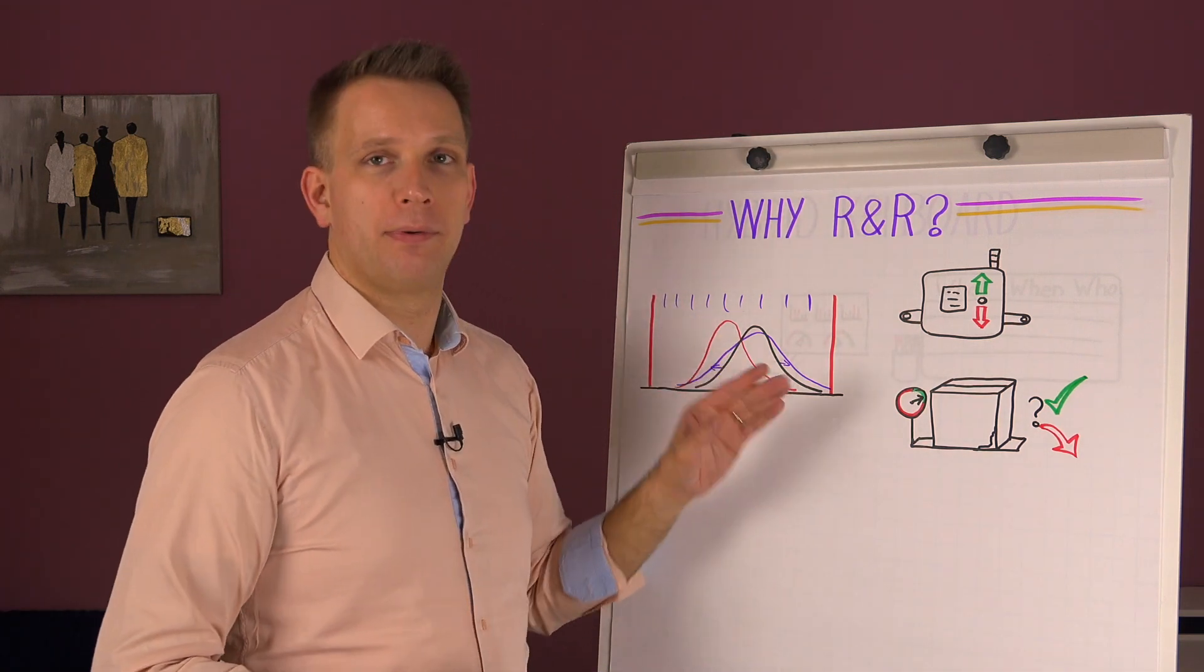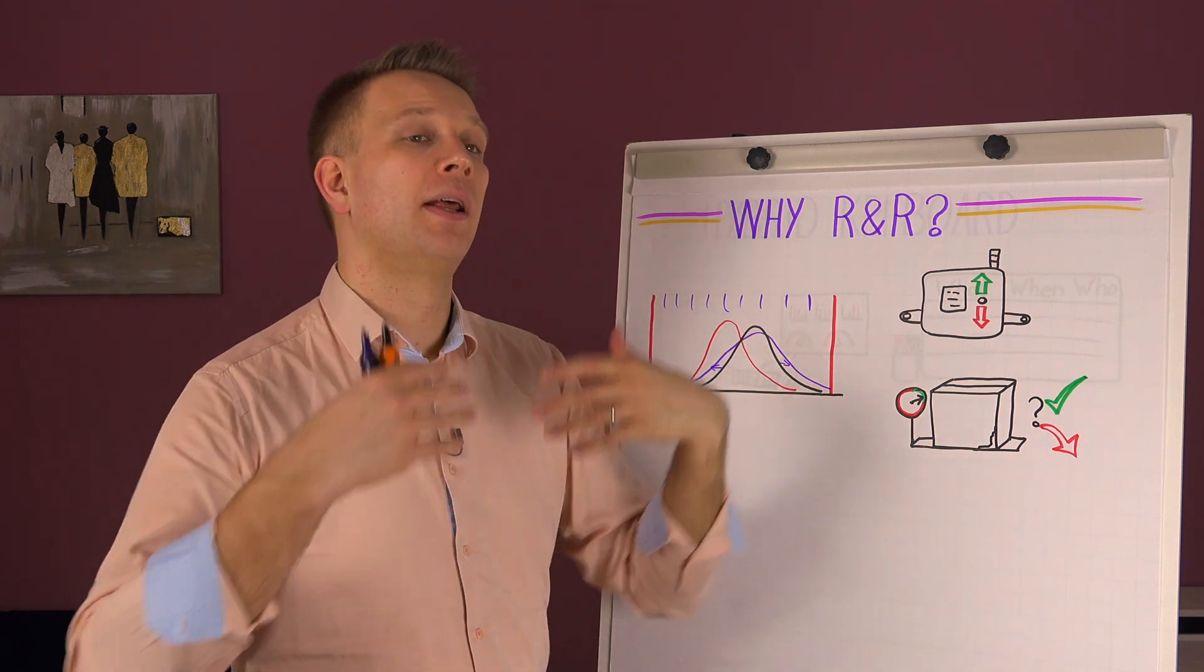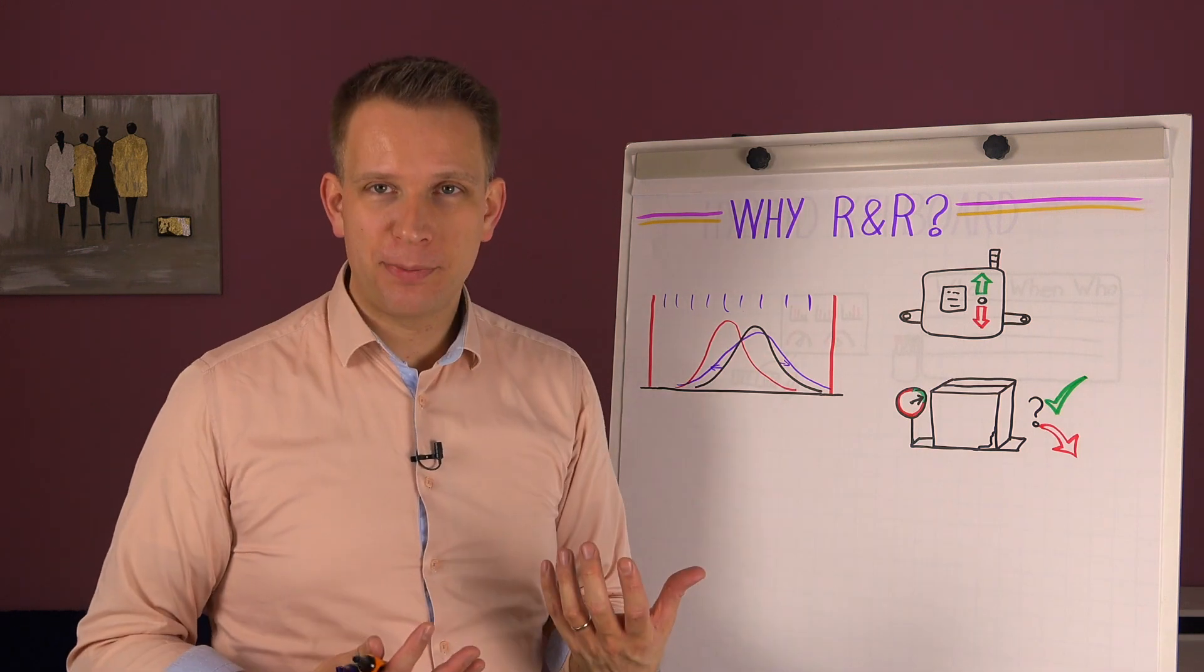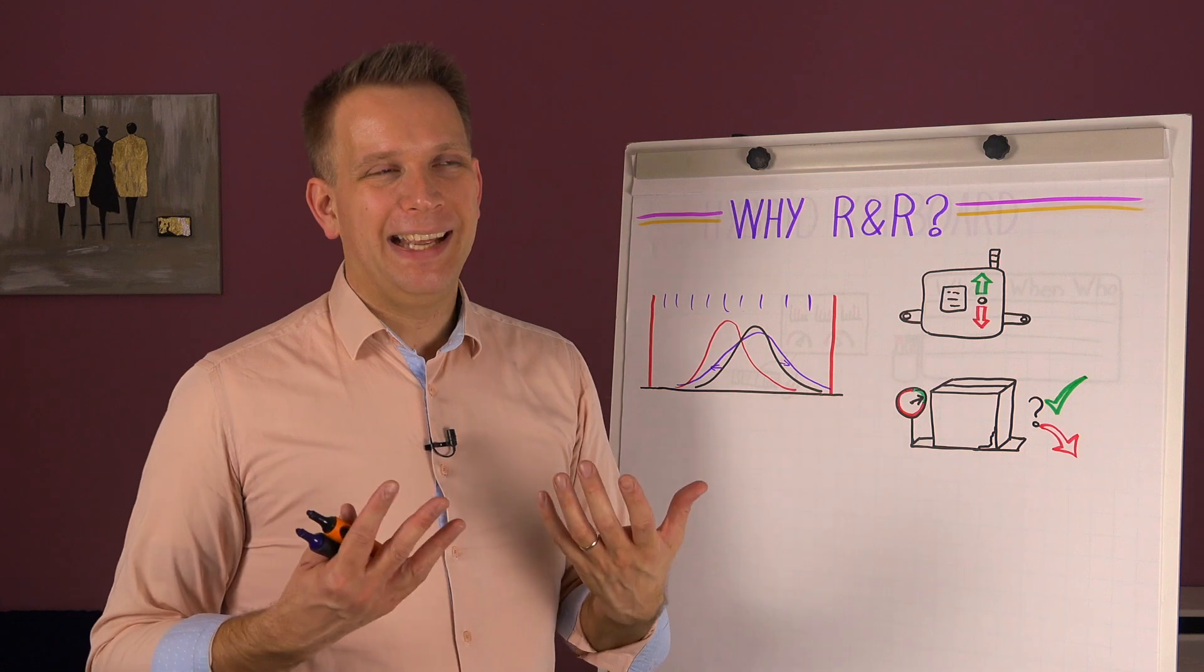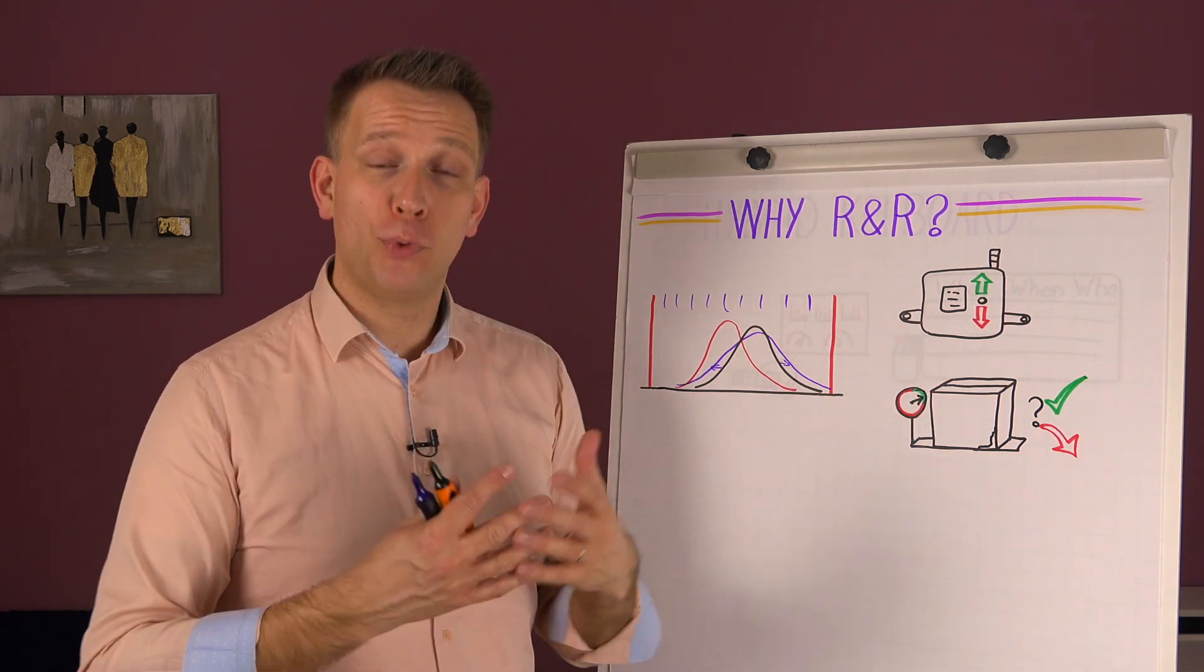When we have not 10 percent, but 30 percent, that really is the max. If more than 30 percent of the observed variation comes from the measurement system, then it actually almost never is a good quality measurement system for this purpose.